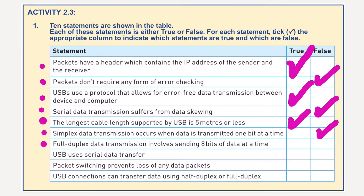Full duplex data transmission involves sending eight bits of data at a time. Well, again, that's false. Full duplex data transmission involves data traveling in both directions simultaneously — nothing to do with whether it's sending eight bits at a time. That would be parallel.